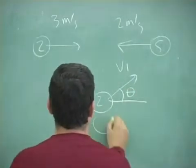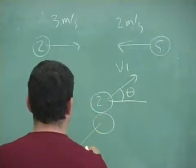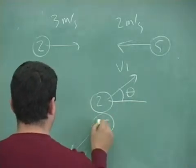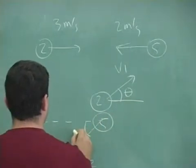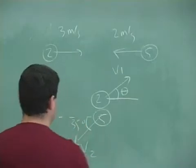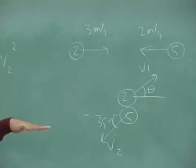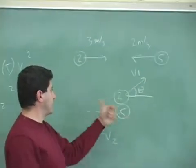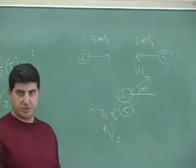And then the five would go down this way. And I could give here 35 degrees, let's say. Okay, so two kilogram comes this way, goes up at an angle theta. And then the five kilogram comes this way, goes down at an angle 35.